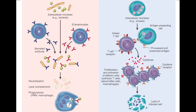You may wonder why the human body attacks bacteria but not itself, since human cells also have surface proteins. Early in development, humans go through an elimination process where any B cells carrying an antibody that would bind to a human cell are eliminated. This process is called clonal selection. The B cells that remain will only attack foreign proteins.